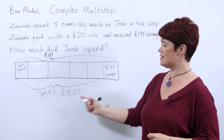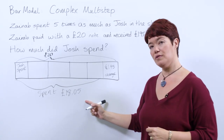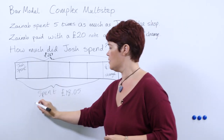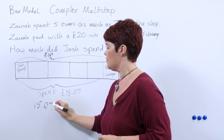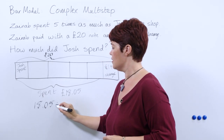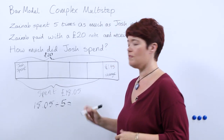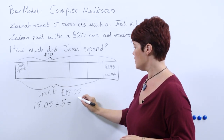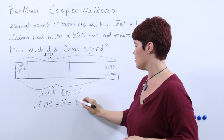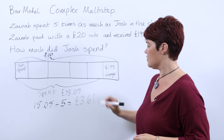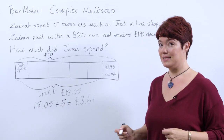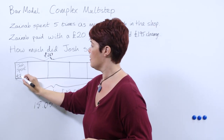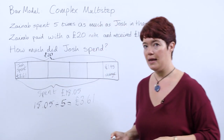So now hopefully they can see that what we've got to do is divide £18.05 by five, using again one of the written methods or one of our mental methods to do that. And they should arrive at the answer of £3.61.